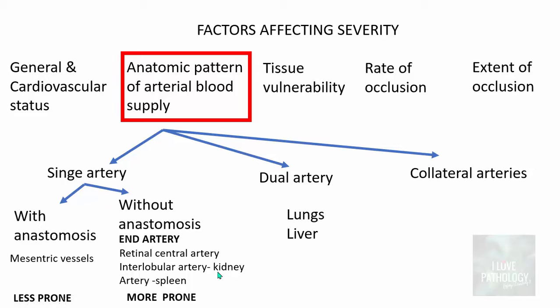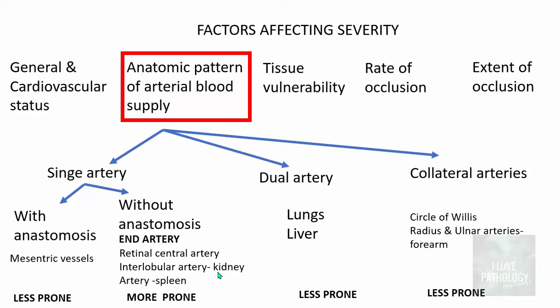Organs with dual blood supply, such as the lungs and liver supplied by both pulmonary and systemic circulation, are less prone to infarction. Similarly, organs with collateral arteries — for example, the circle of Willis at the base of the brain, or the radial and ulnar arteries of the forearm — are also less prone to developing infarction.